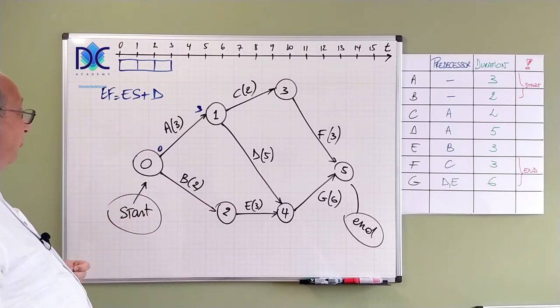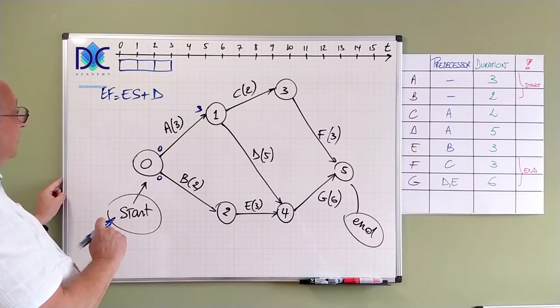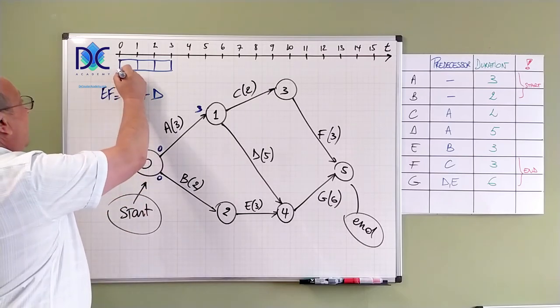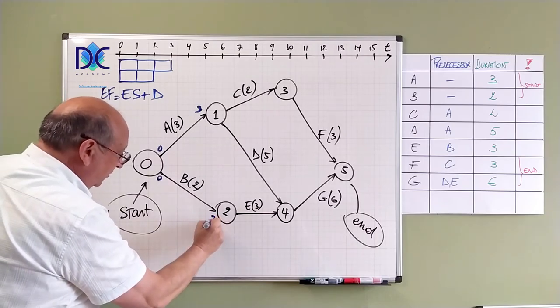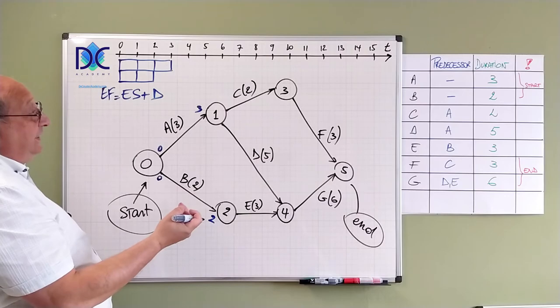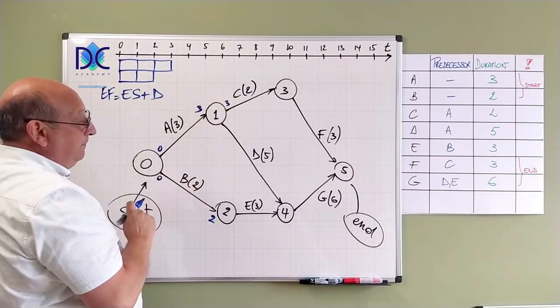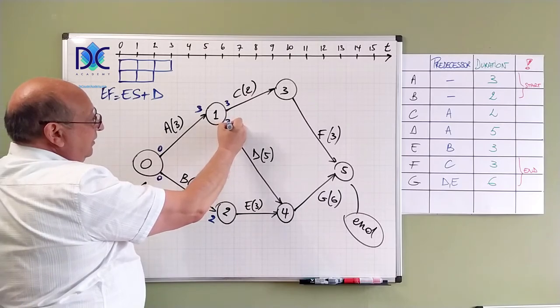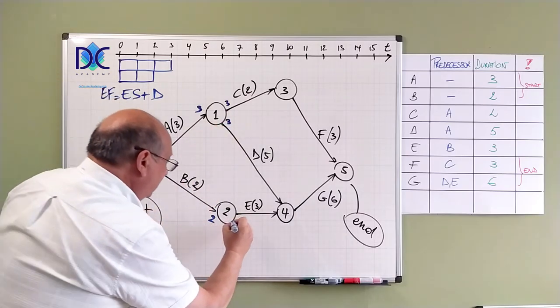It's a quite easy formula. For B we have the same. B starts at moment zero. And ends at moment two. At time two. A period of two. Now what's next? C will start after A. D will start after A. And E will start after B.